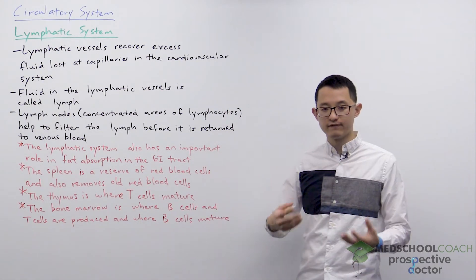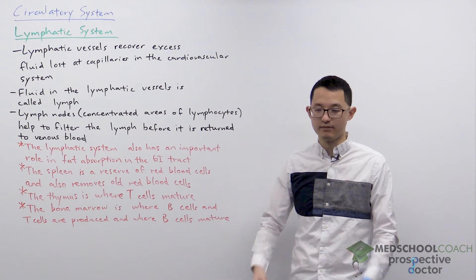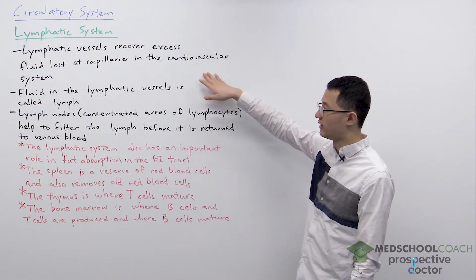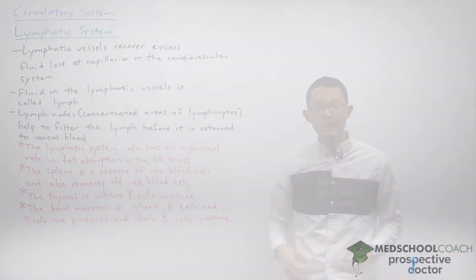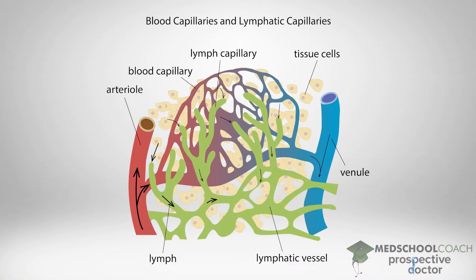In terms of the function of the lymphatic system, the first thing you want to recall is that in the cardiovascular system there is a net loss of fluid at the capillaries. This net loss of fluid at the capillaries would cause all of our tissues to swell if it wasn't for the lymphatic system.